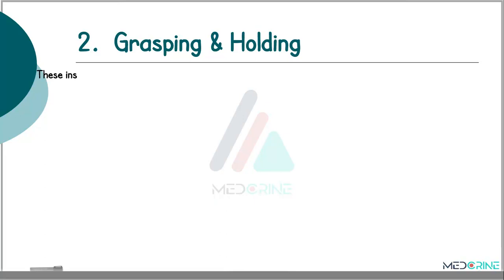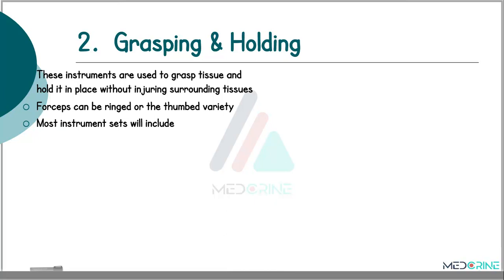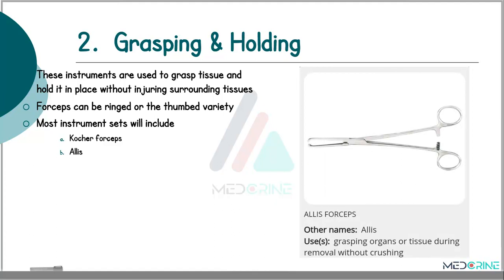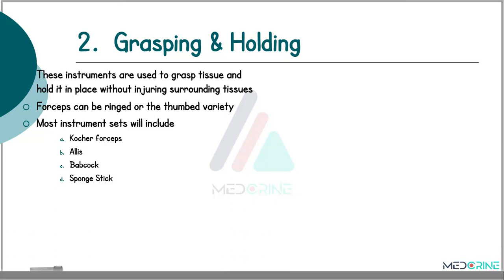The second classification of surgical instruments is grasping and holding instruments. These instruments are used to grasp tissues and hold them in place without injuring the surrounding tissues. The forceps can be either ringed or thumb-type. Most instrument sets will include Kocher forceps, Allis forceps — used in grasping organs or tissues during removal without crushing — and Babcock forceps, sponge sticks or Rampley sponge holding forceps.